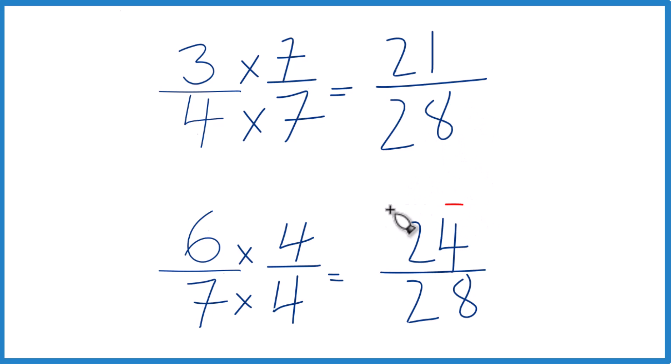So twenty-four twenty-eighths, that's greater. And six-sevenths and twenty-four twenty-eighths, they're the same. So we could say six-sevenths is greater than three-fourths as well.